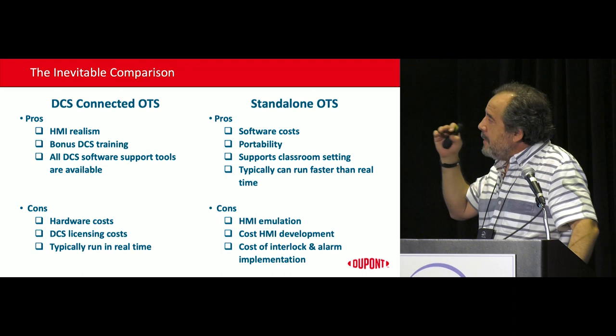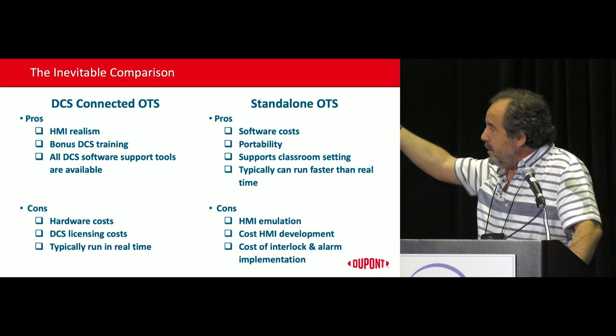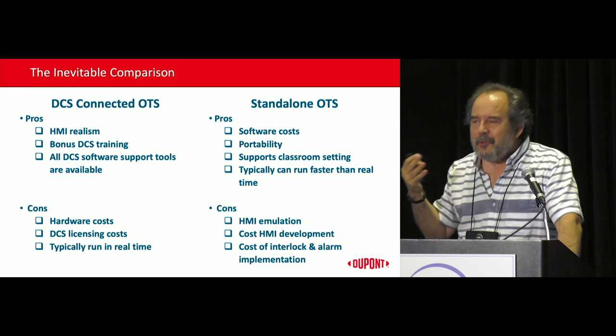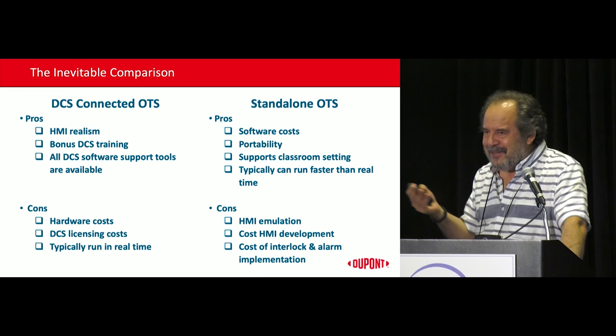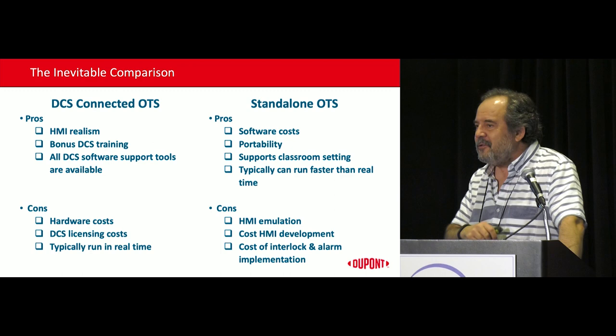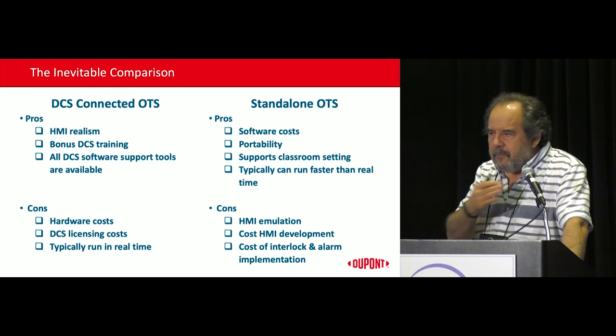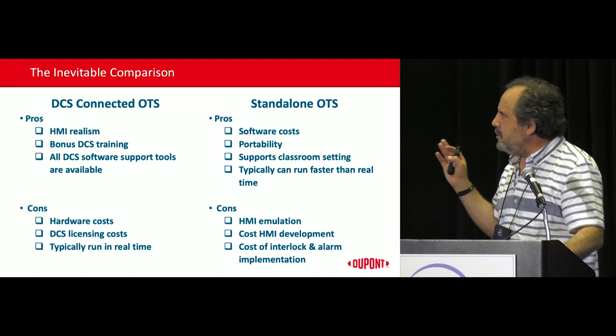So those are the two types of training systems that we have. In this case, the native HMI is not used at all. So obviously you want to compare them. The good things about having a DCS connected one, of course, is that you have the real thing — you have the real HMI. And because of that, you're getting the bonus of training people how to use the DCS. So if you want somebody to learn how to use the Emerson or Honeywell or ABB system, if you have a connected one, you have the system, you can learn how to navigate. And with it will come all the tools that the DCS may have.